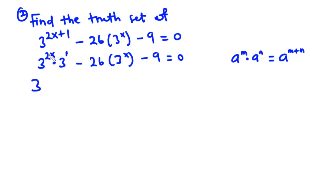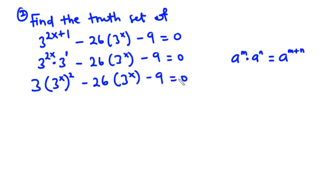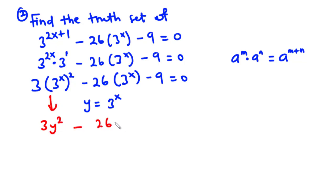Now 3 exponent 2x is the same as 3 exponent x all squared. Because we have 3 exponent x appearing in multiple terms, let's substitute: let y equal 3 exponent x. Then we have 3y squared minus 26y minus 9 equals 0. It is clear that we have a quadratic equation, so let's factorize it.